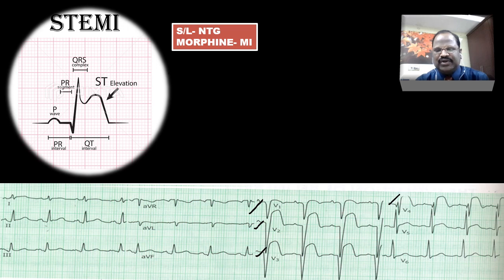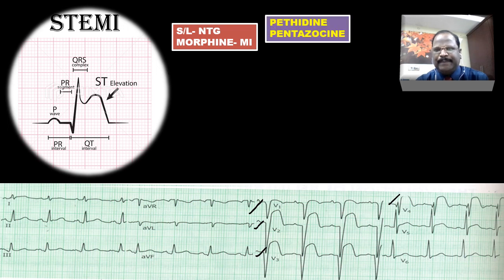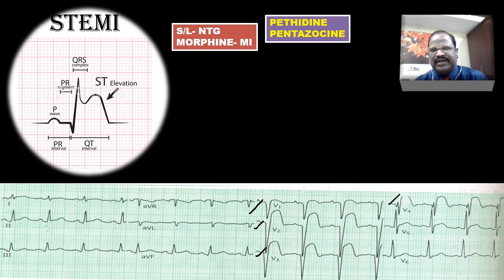Another analgesic useful to control acute pain in MI patients is opioids like morphine. But remember, some opioids should not be used in MI: pethidine and pentazocine. Pethidine has anticholinergic action; pentazocine has sympathetic stimulatory action, causing tachycardia, increasing oxygen demand, and worsening the angina. These are opioid contraindications for treating pain in MI patients.